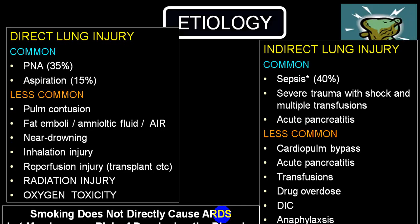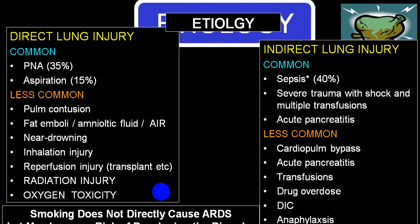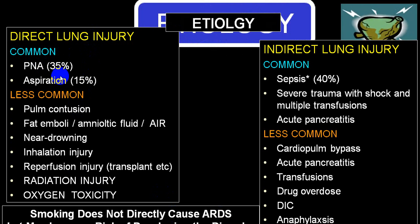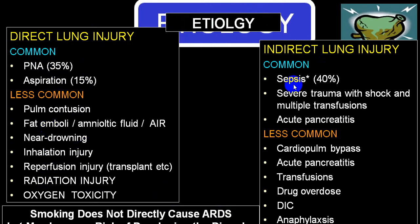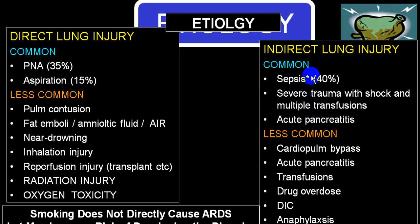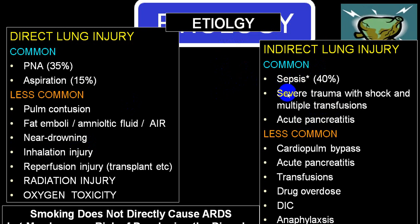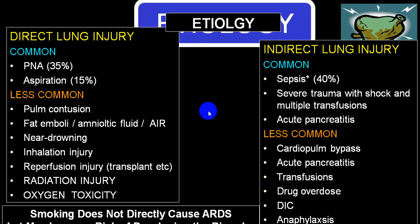In ARDS, which is very common in a shock stage, the most common cause is direct lung injury like pneumonia and aspiration pneumonia. Uncommon direct causes include radiation injury, reperfusion injury, fat embolism. Indirect lung injury: sepsis is topmost, then severe shock due to trauma, multiple blood transfusions, and acute pancreatitis. Almost in cases of septic shock or hemorrhagic shock, the chance of ARDS is very, very high. Always remember: smoking does not cause ARDS.